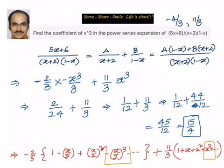This is essentially a partial fractions problem. Once we find the values of A and B, we convert them into known power series expansions and apply the formula. We then look only for the term whose coefficient we need, add all contributions, and get our answer. We'll do a couple more problems on power series expansion with partial fractions. Thanks for your time and support. Bye for now.